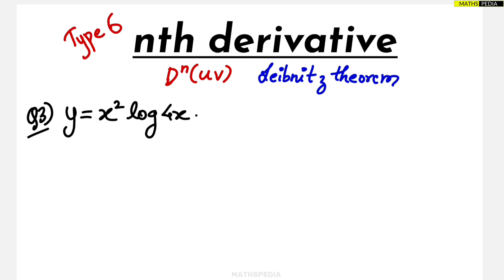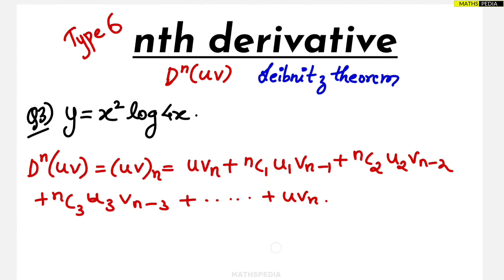In this video we are going through Type 6 Leibniz theorem problems, which are based on the product of two functions u and v, where u is taken as the polynomial. This is the formula for Leibniz theorem. u is taken as a polynomial — for example, we are taking u as x squared.